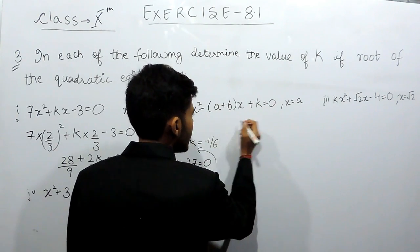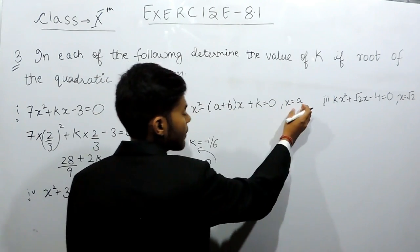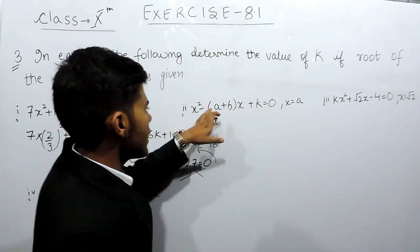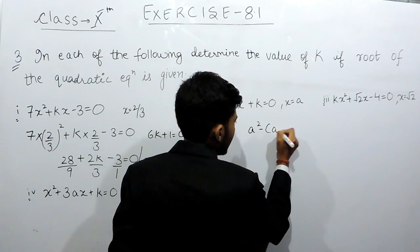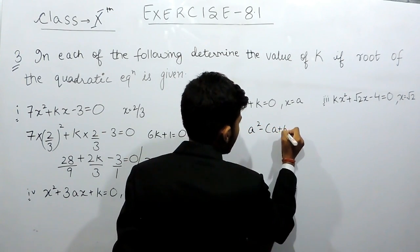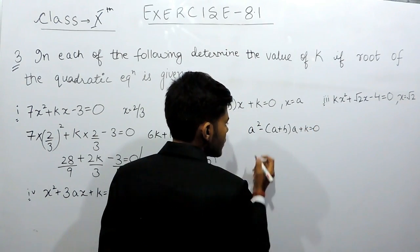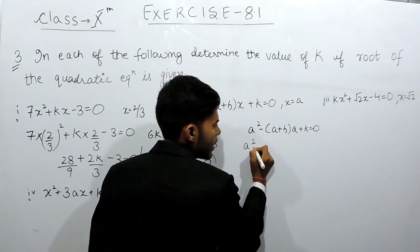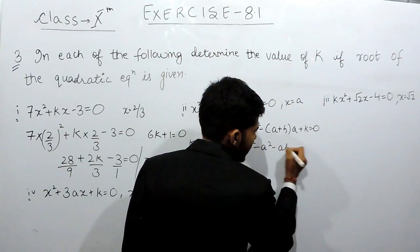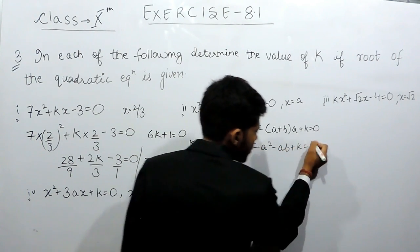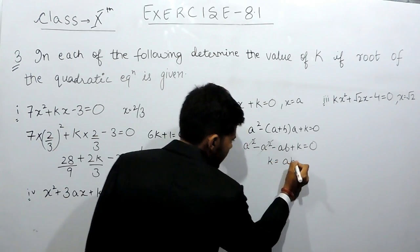In part 2, we will keep x equals to a in this equation. So that will be equals to a square minus a plus b, multiplied by a, plus k equals to 0. That will be equals to a square minus a square minus ab plus k equals to 0. The a square is cancelled out and k will be equals to ab.